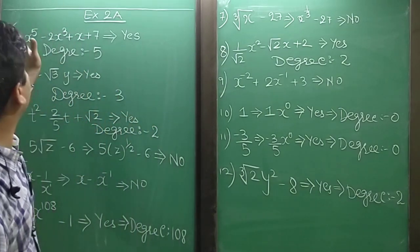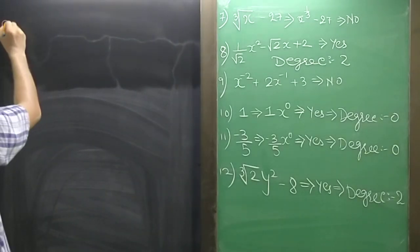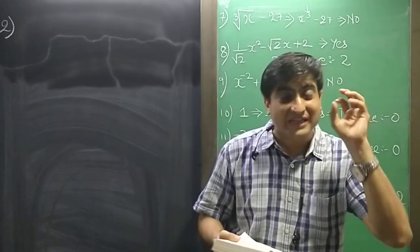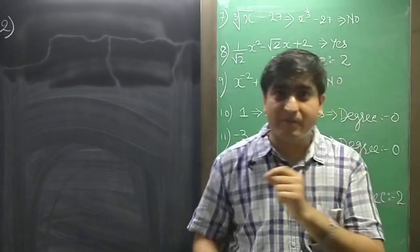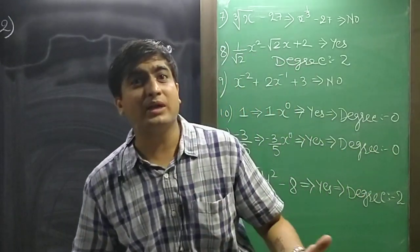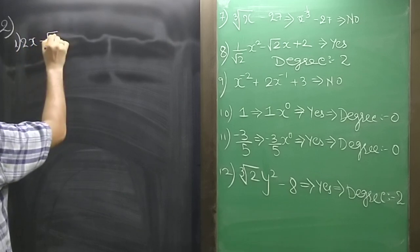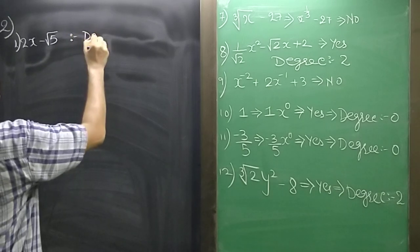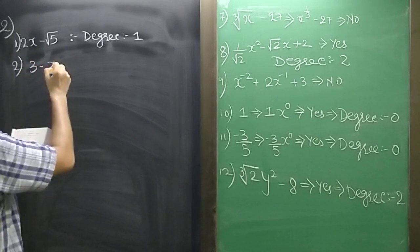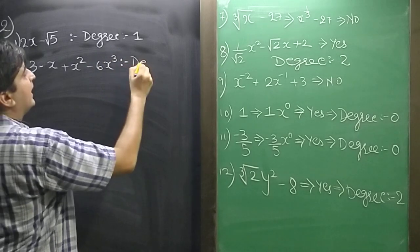Now we move to the second major sum: write the degree of each of the following polynomials. Degree is the maximum power. Sum 1: 2x minus root 5 — maximum power is 1, so degree is 1. Sum 2: 3 minus x plus x squared minus 6x cubed — maximum power is 3, so degree is 3.